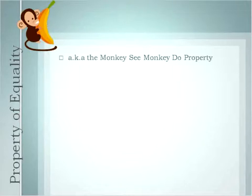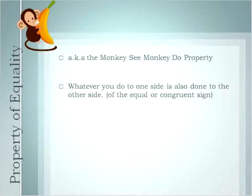The first one is the property of equality, also known as the monkey see, monkey do property. This property basically means that whatever you do to one side of an equal sign or a congruency sign, you have to do to the other side of that equation or congruence.